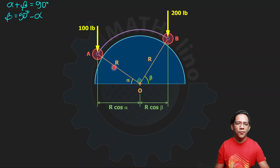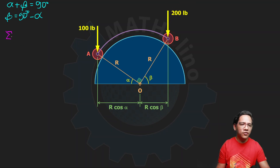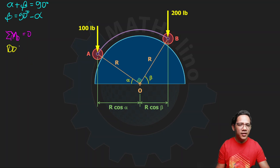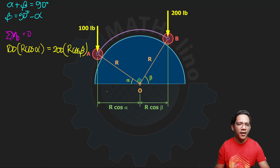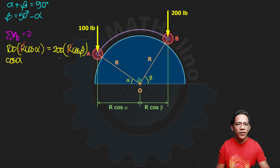Summation of moments at O must equal zero. The 100-pound force creates counterclockwise rotation with moment arm R cosine alpha, and the 200-pound force creates clockwise rotation with moment arm R cosine beta. We can cancel out R, so the resulting equation is: cosine alpha equals 2 cosine beta. We substitute beta equals 90 degrees minus alpha.